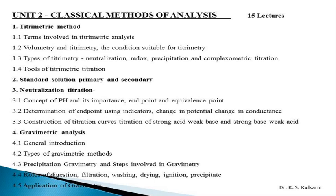Then you have to learn in detail about neutralization titration — the concept of pH, its importance, how to find out end point and equivalence point, determination of end point using indicators, potential change and conductance. Then how to construct titration curves of strong acid–weak base and strong base–weak acid. In the last part of this chapter you have to learn gravimetric analysis — general introduction, its types, precipitation gravimetric, various steps involved: role of digestion, filtration, washing, drying, ignition, and applications of gravimetric.